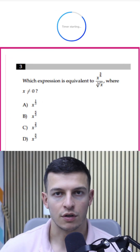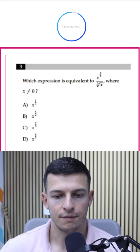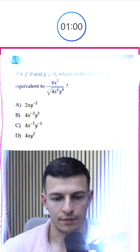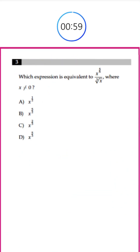Can you solve this SAT equation in under one minute? Which equation is equivalent to x to the power of 5 over 6, divided by the square root of the cubic root of x, where x is different than 0?